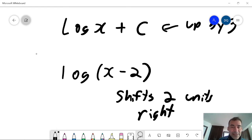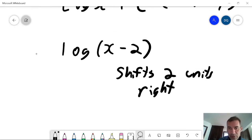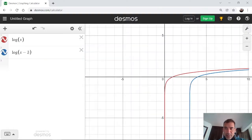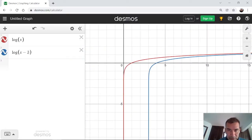And it also has an effect on the domain. The domain is now x is greater than 2. Because before our domain was x was greater than 0. By shifting the entire graph 2 units to the right, the domain is now x is greater than 2.